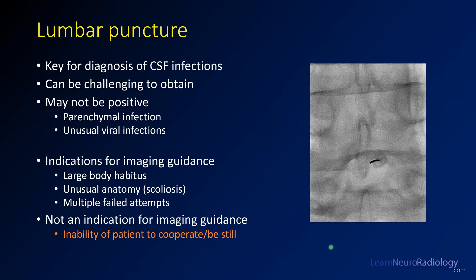Now let's talk about corollary tests when evaluating for CNS infection. Lumbar puncture is the sampling of CSF by placing a needle in the thecal sac in the lumbar spine, and it's a key tool for diagnosing CNS infections. It can be challenging in patients with large body habitus or who are altered and can't lie still. Keep in mind that many parenchymal infections or abscesses confined to the parenchyma may not yield positive LP results, or may show only mild lymphocytic predominance. Unusual viral infections can also be negative or show only mild pleocytosis. If multiple LP attempts have failed, you might consider requesting an image-guided lumbar puncture from radiology.